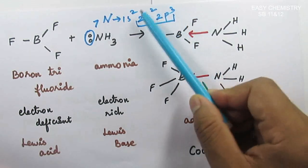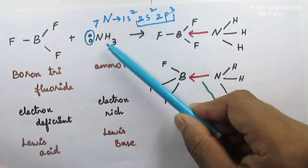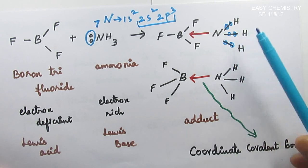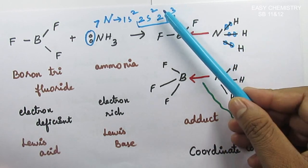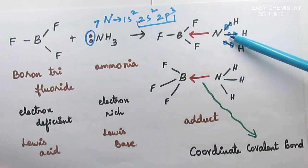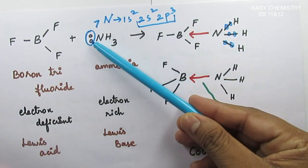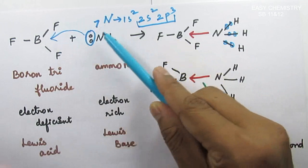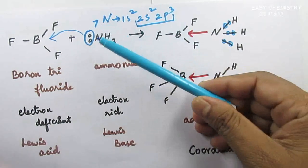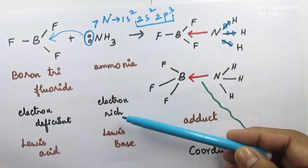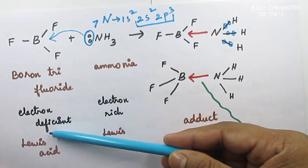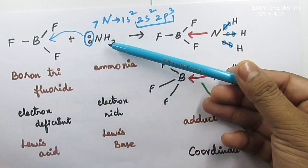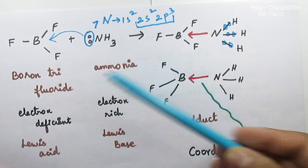In the valence shell, there are 5 electrons. Out of 5 electrons, 3 electrons are used for bonding in nitrogen. Remaining 2 electrons are lone pair. The electron is rich, electron rich molecules. These molecules are called electron rich.